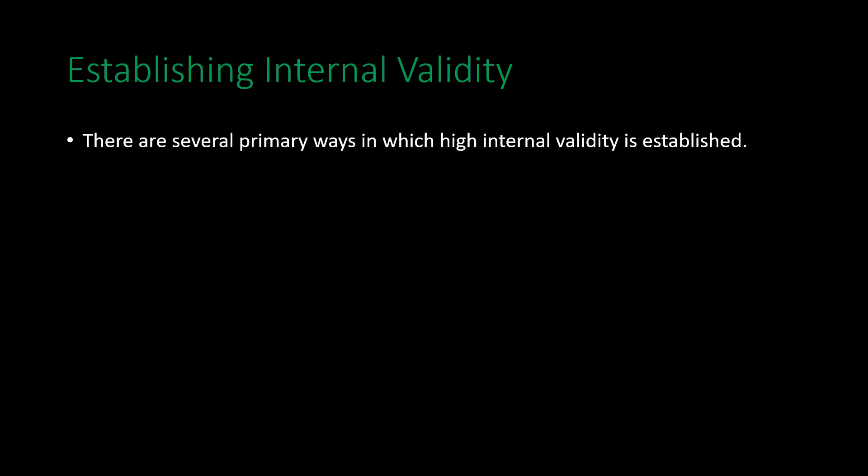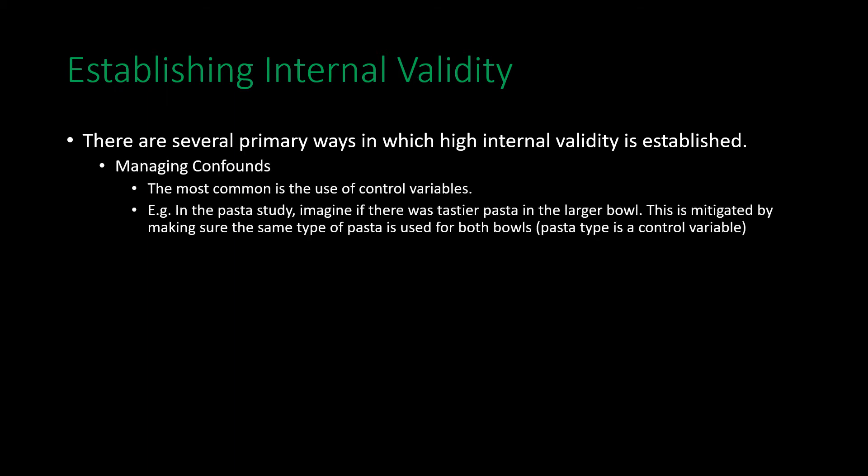When establishing internal validity, there are more concerns in experiments than in other research forms. One approach is managing confounds — the most common method is to use control variables. If a variable has some possible relationship to the dependent variable but is not the primary independent variable of interest, we can manage it by ensuring that the same level of that variable exists across all groups in the experiment.